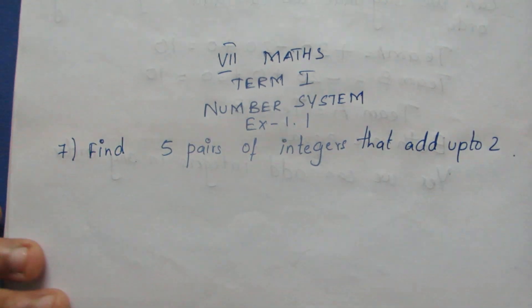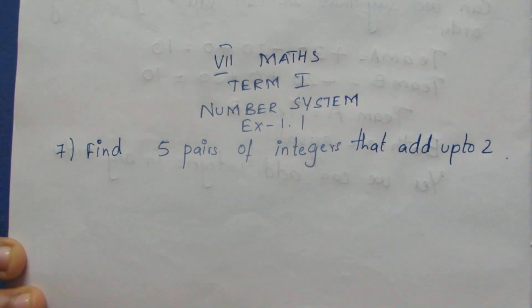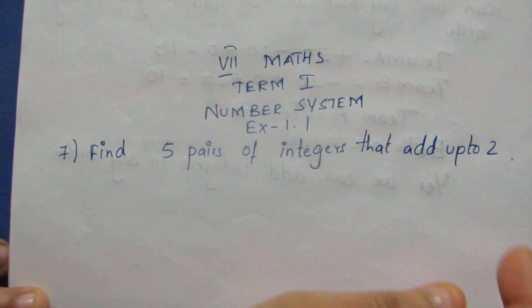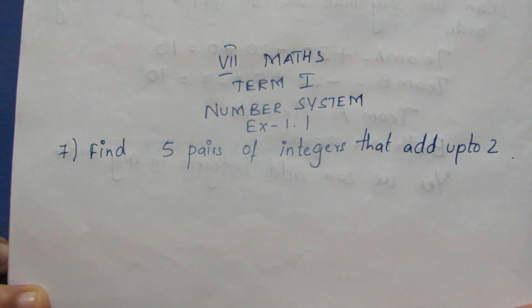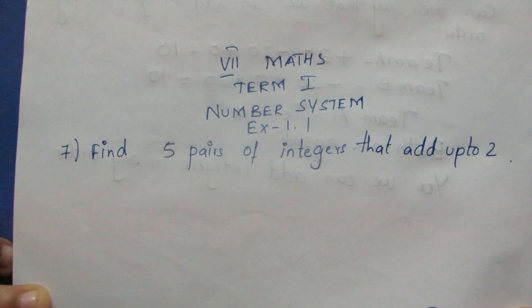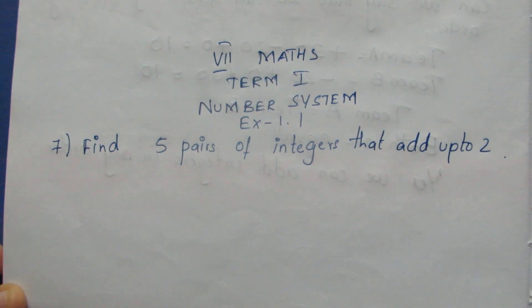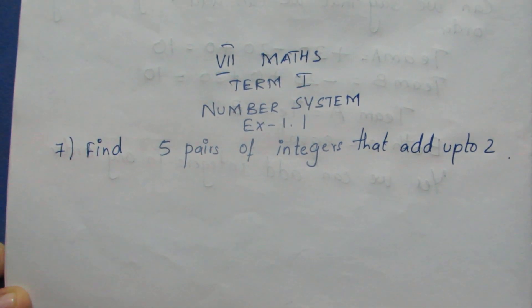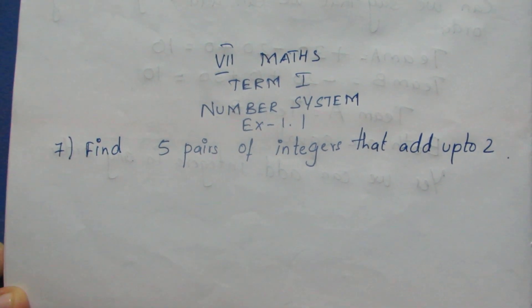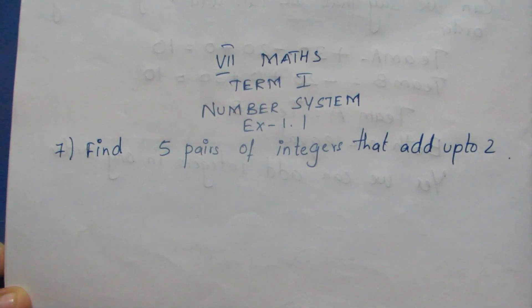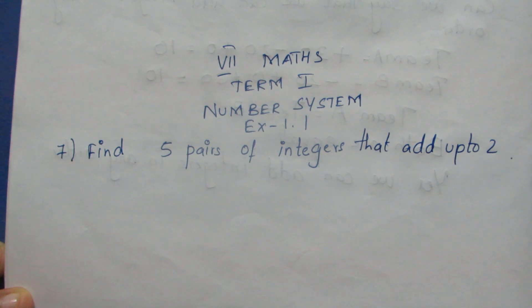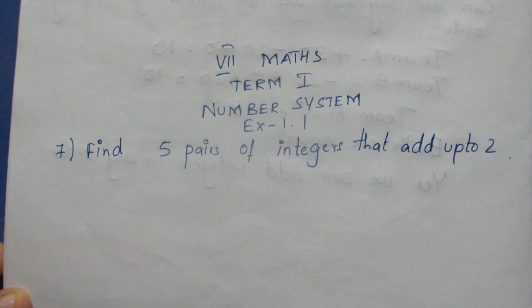Hello viewers, I am Maikli. Today is the 7th max term 1 number system exercise, 1.107 term. Find 5 pairs of integers that add up to 2.